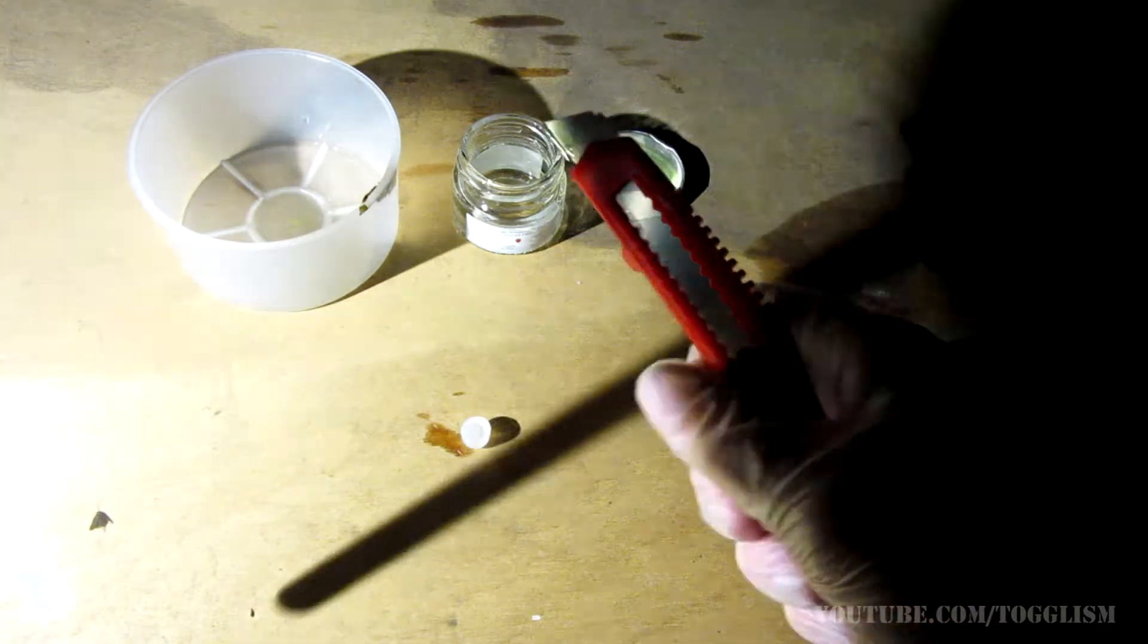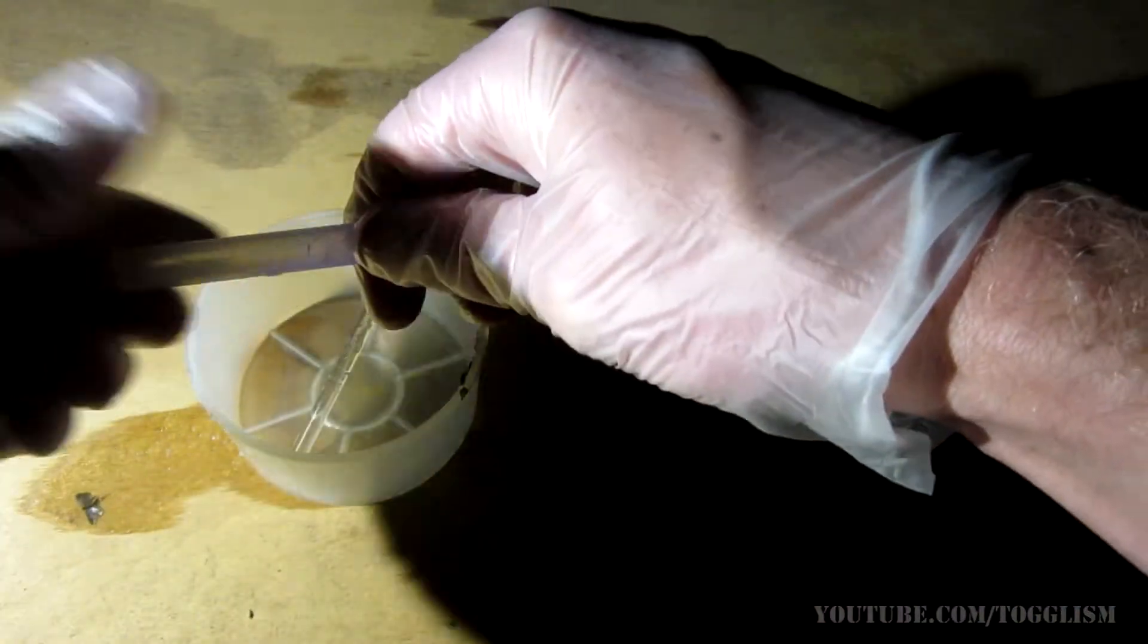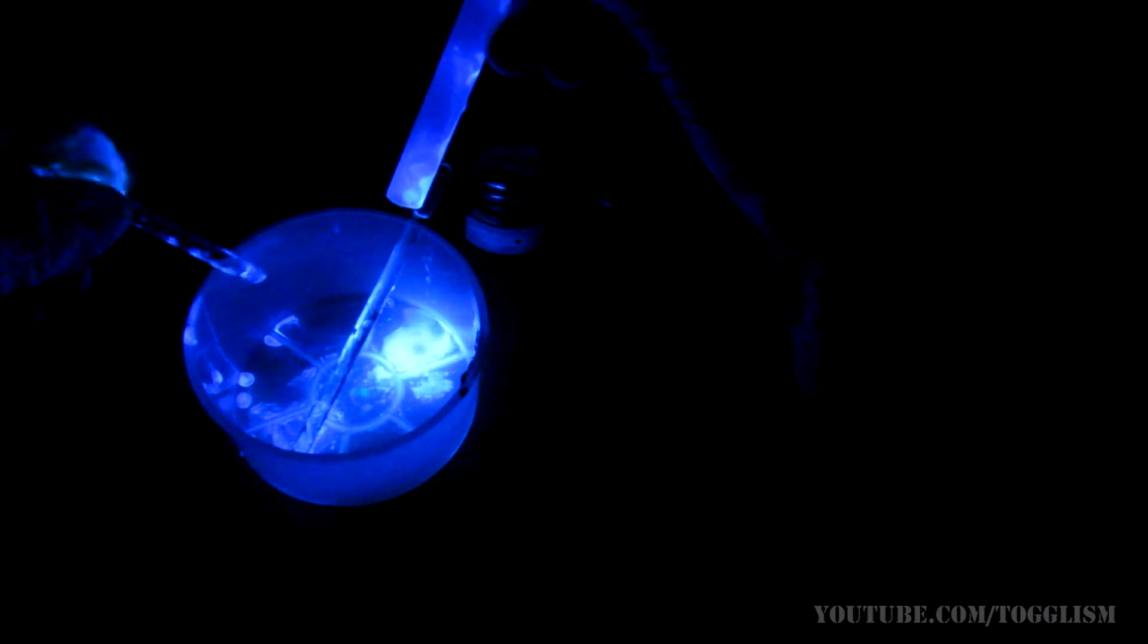Basically glow sticks are made up of two chemicals which react to create energy, these being phenyl oxalate ester and hydrogen peroxide which is in the glass tube, and a fluorescent dye which converts the energy created from the chemical reaction into light, giving us chemiluminescence.